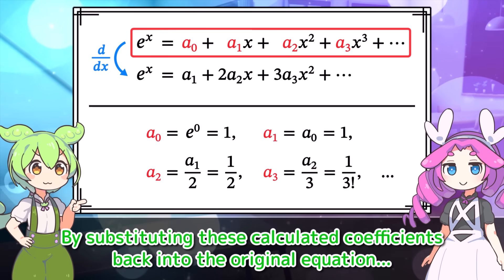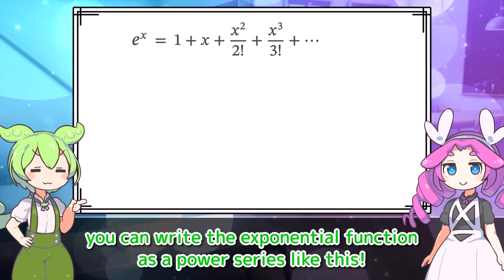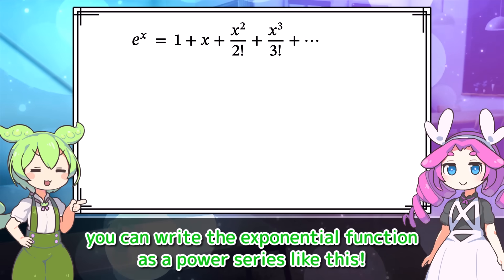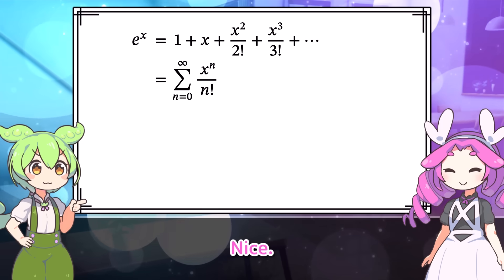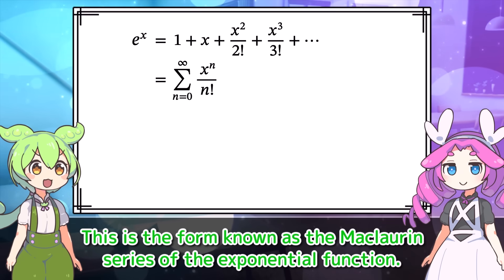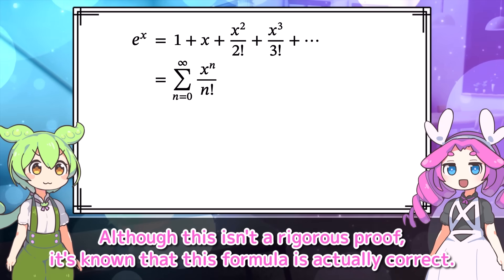By substituting these calculated coefficients back into the original equation, you can write the exponential function as a power series like this. Using sigma, we can also represent it this way. This is the form known as the Maclaurin series of the exponential function. Although this isn't a rigorous proof, it's known that this formula is actually correct.